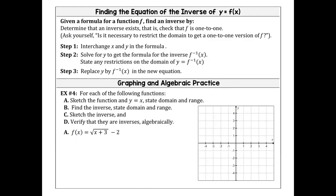Step one: interchange your x and y in the formula. Step two: solve for y. Step three: state the restriction you set in place. Then label it as f inverse because it's now your inverse function.